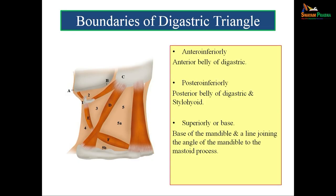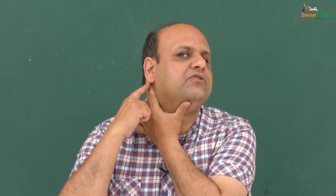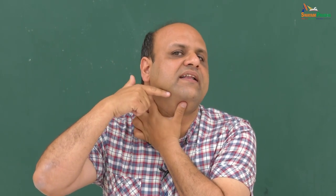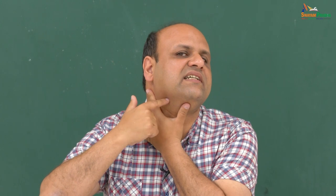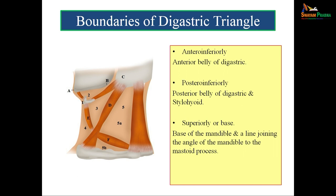Small submental veins join to form the anterior jugular veins. The boundaries of the digastric triangle are: anteroinferiorly, the anterior belly of digastric; posteroinferiorly, the posterior belly of digastric and stylohyoid; and the base is formed by the mandible and the line joining the angle of mandible to the mastoid process. In the figure, 1 is the submental triangle, 2 is the digastric triangle, A is the mentum, B is the angle of mandible, and C is the mastoid process.